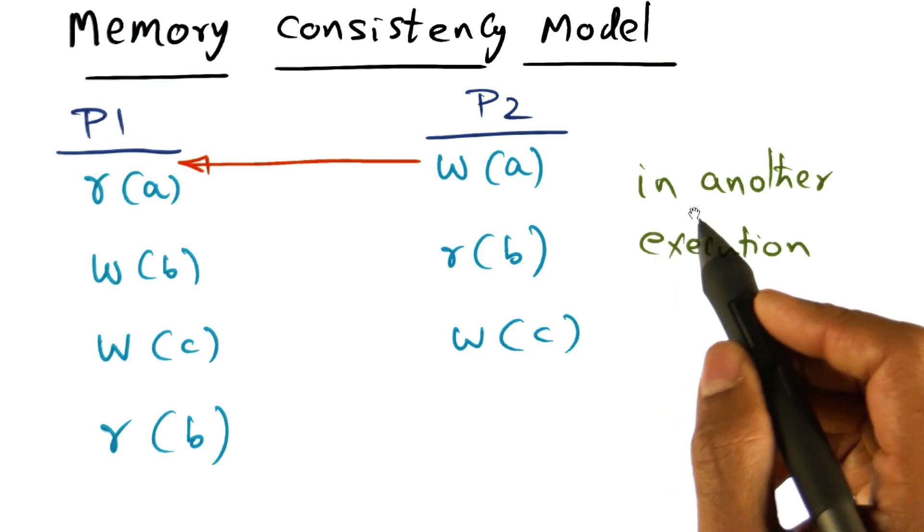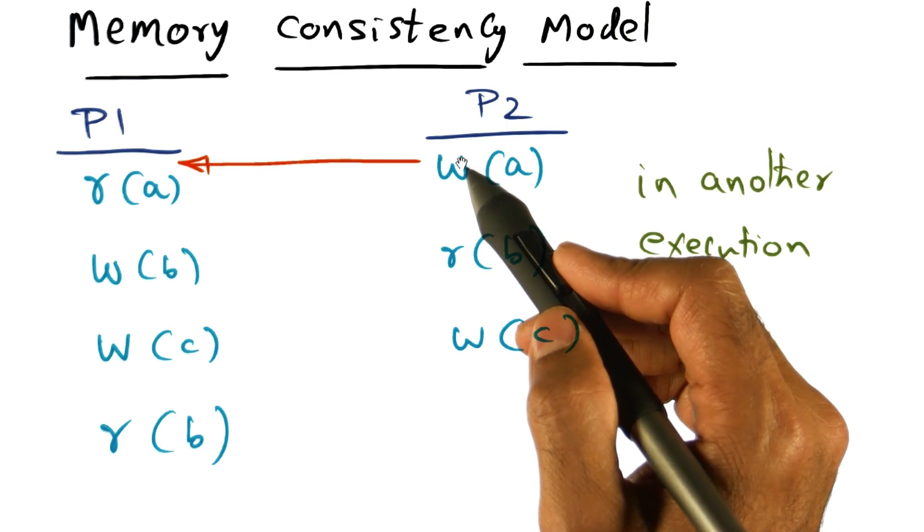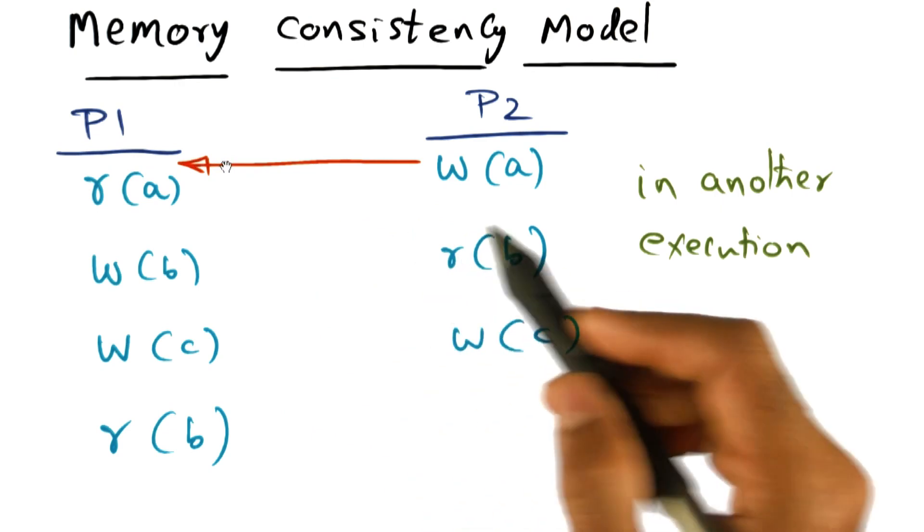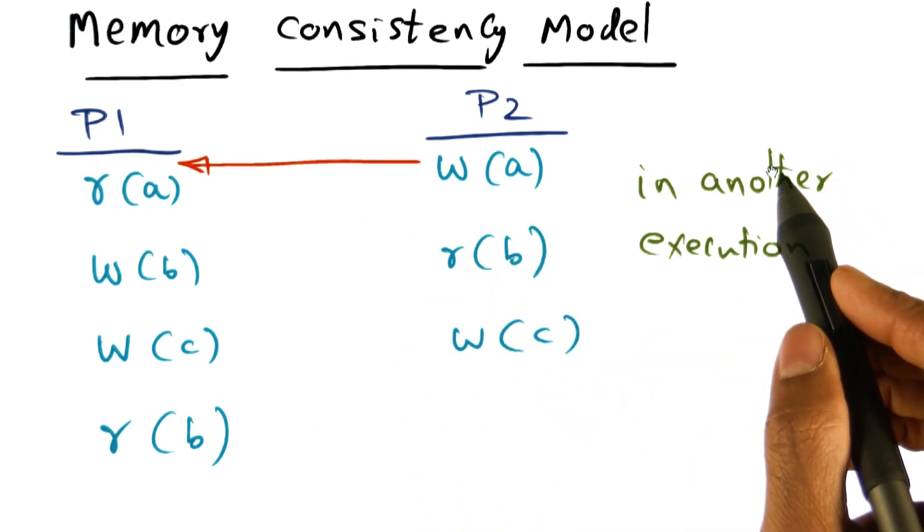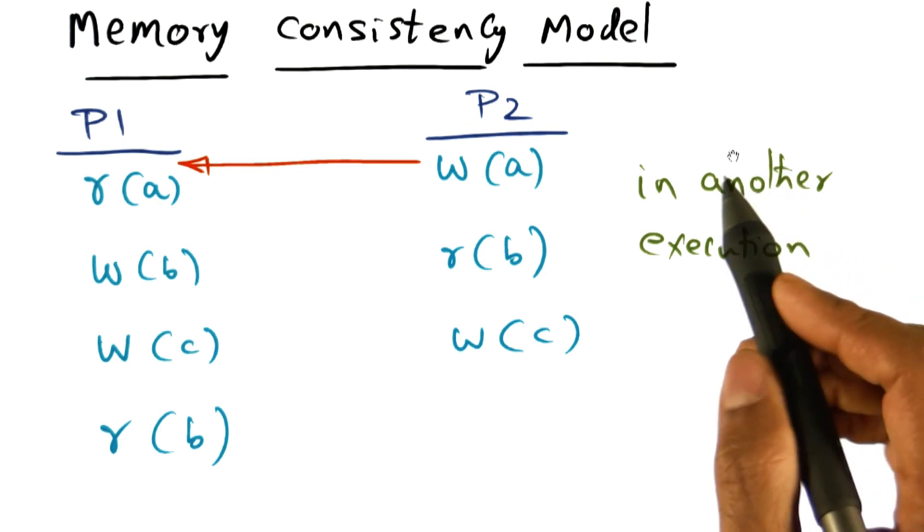And if you think about it, both of these executions, whether it is the earlier execution where write happened after this read, or this execution in which the write is happening before the read, both these executions are reasonable and correct and something that the programmer can live with. It's acceptable to the programmer.